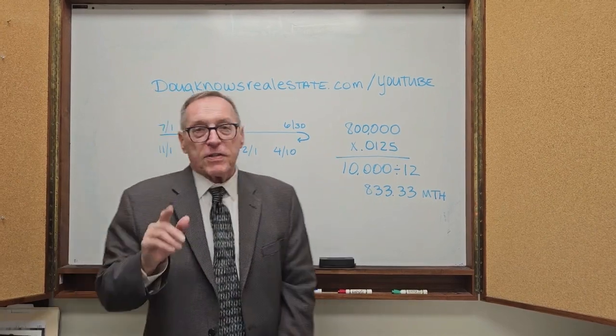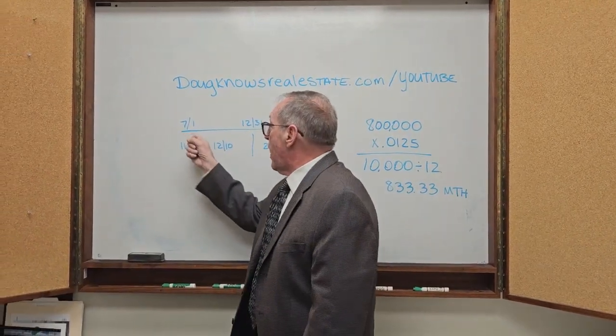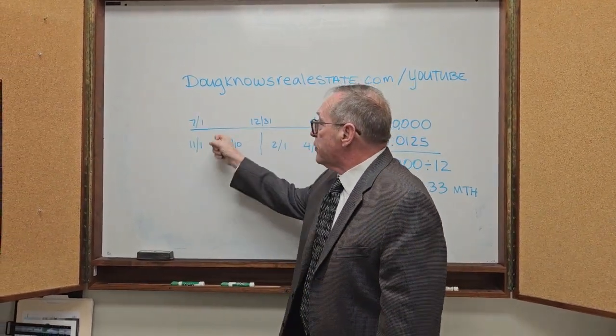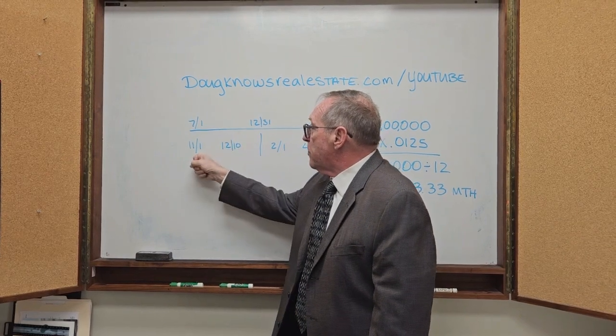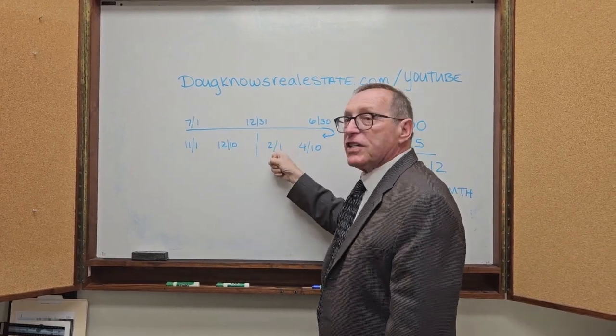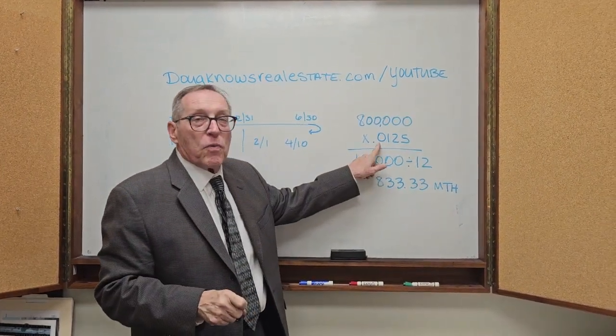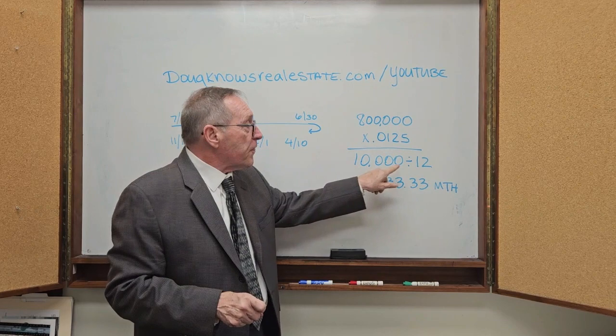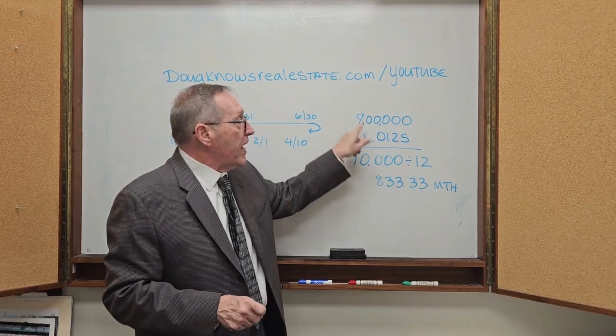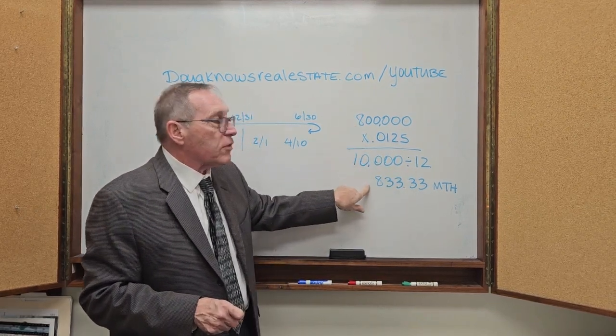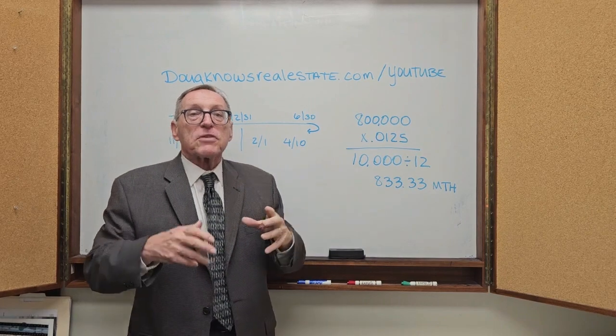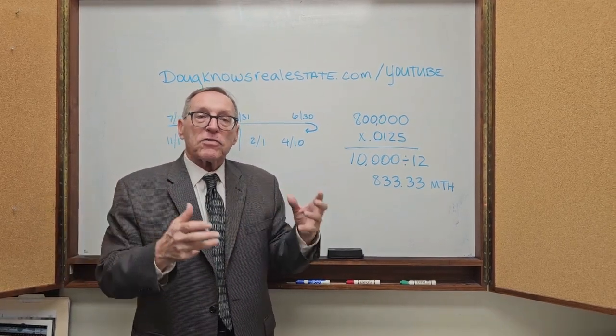So let me go over that again. The tax year is July to June. And the payments for this first section is November. And the payment for the second section is February. And the amount that you pay when you're buying is based on 0.0125. And for the $800,000 purchase it's going to be $833 a month. And that's going to be an impound set up.